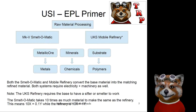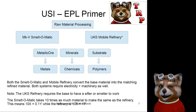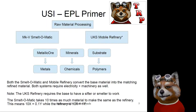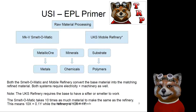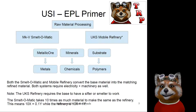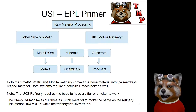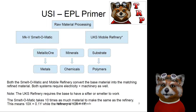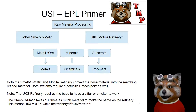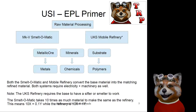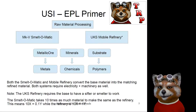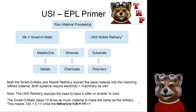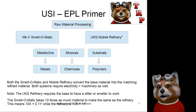Both the Smelt-O-Matic and the Mobile Refinery require electricity and machinery. Importantly, the UKS Mobile Refinery requires that you have a Mark V sifter or smelter on the base in order for it to work. So even though you may not be actively using the Mark V sifter or smelter by the time you get the Mobile Refinery down there, you're still going to need it present in order to make it operate.